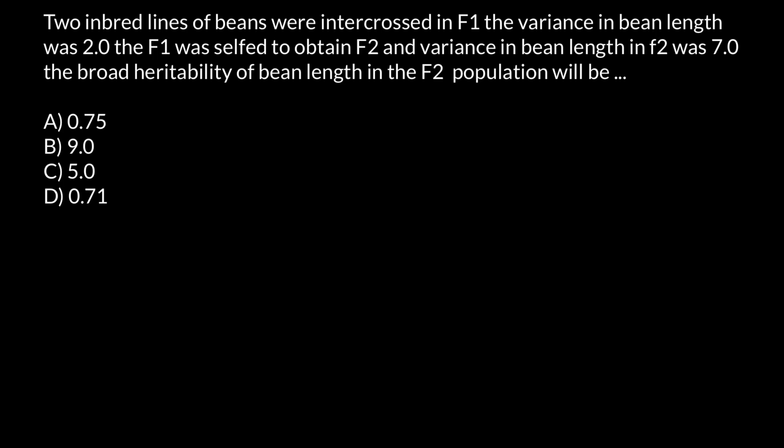Two inbred lines of beans were intercrossed in F1 generation. The variance in bean lengths was 2. The F1 was selfed to produce F2, and the variance in bean lengths in F2 was 7. The broad-sense heritability of bean lengths in the F2 population will be — and you have to choose a correct answer.